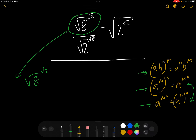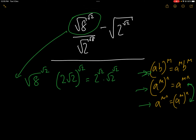So let's take each of the expressions one at a time. Root 8 to the power of root 2: well, root 8 can be written as 2 root 2, so that's (2 root 2) to the power of root 2. Then by power rule 1 — ab to the m is a to the m times b to the m — that is 2 to the root 2 times root 2 to the root 2. Let's just leave that for the moment.